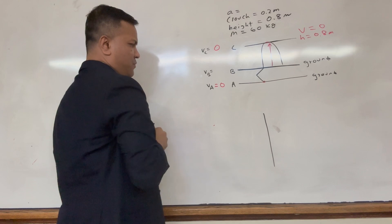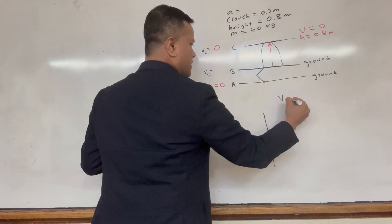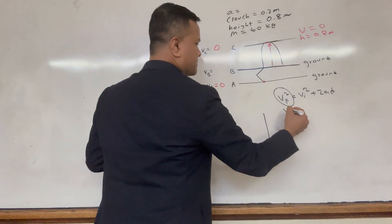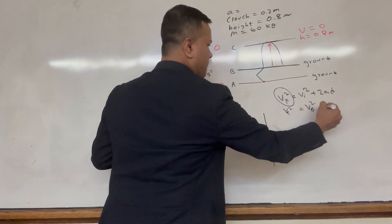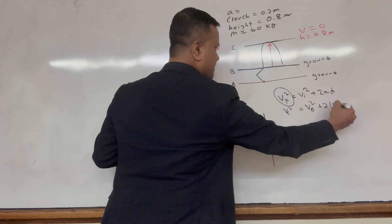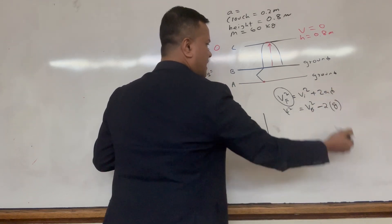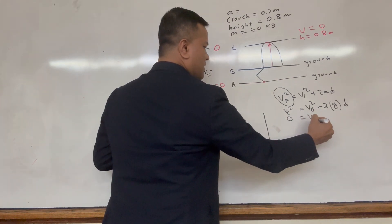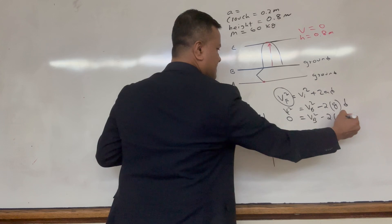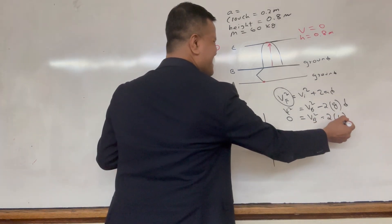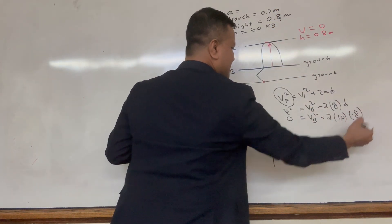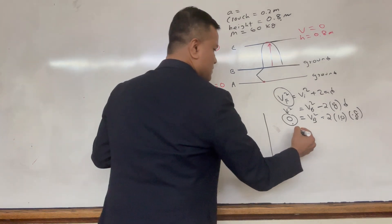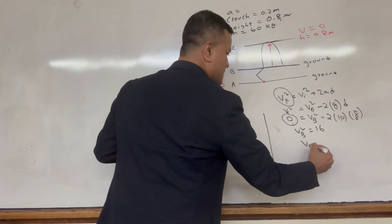We need to find the velocity at location B. Using VF² = VI² + 2aD, substituting VC=0, g=-10, and D=0.8 meters, we get VB² = 16, so VB = 4 m/s.